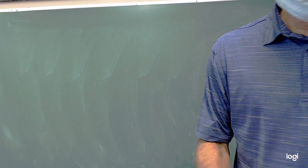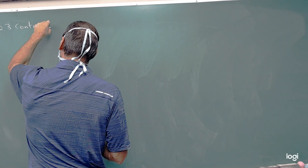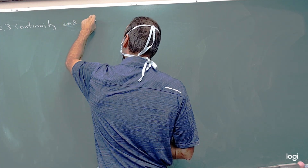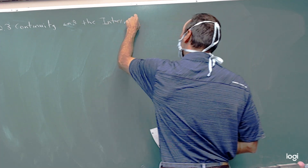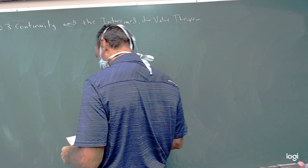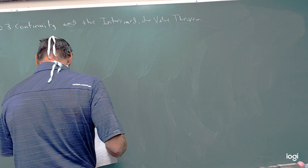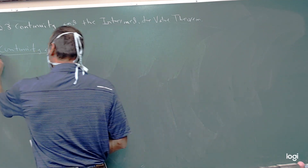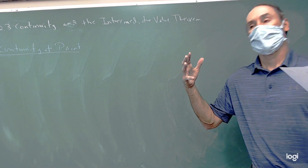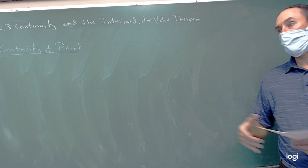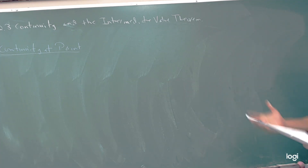So let's jump on to continuity and the Intermediate Value Theorem. We'll build off the idea of continuity at a point, and then once we understand what that means, we can go on and talk about continuity on an open interval, continuity on a closed interval, and then we'll look at the Intermediate Value Theorem, which is a theorem about continuity.